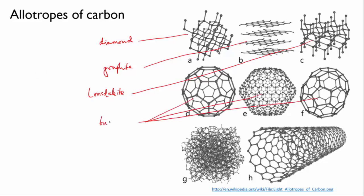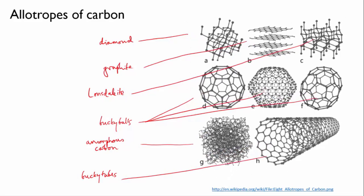Then we've got a variety of buckyballs with different numbers of carbon atoms involved. We've got amorphous carbon and we've got bucky tubes, also known as carbon nanotubes. So let's explore these a bit more deeply.